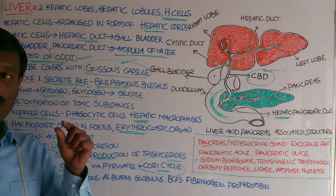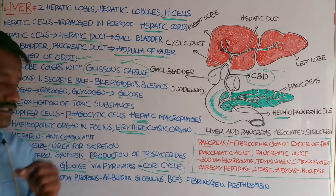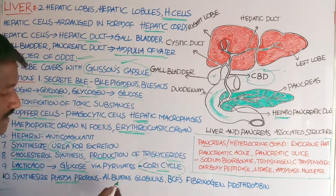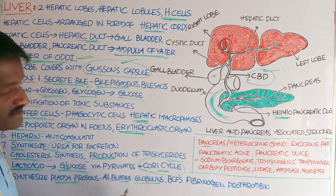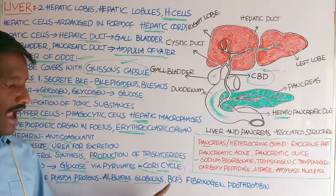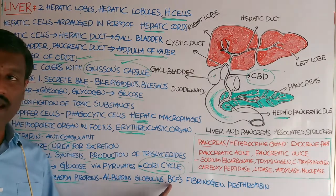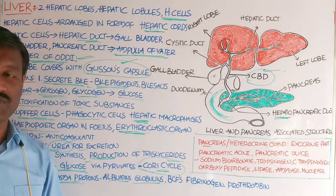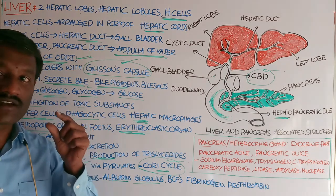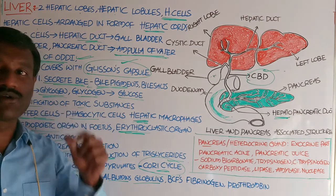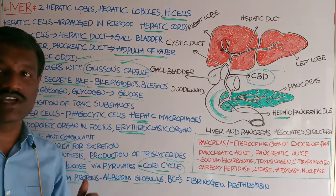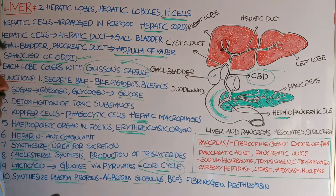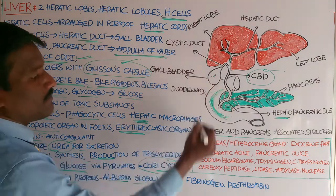The liver helps in the synthesis of plasma proteins such as albumins and globulins. It also forms blood clotting factors such as fibrinogen and prothrombin. The liver acts as a thermoregulatory organ through the storage of glucose in the form of glycogen.